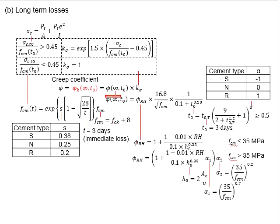This creep coefficient is determined by the equation here, which is in the functions of phi RH as defined by these two equations. There are two equations here. The FCM will define which equation is to be used to determine this phi RH. If the FCM is less than 35 MPa, this equation is to be used.